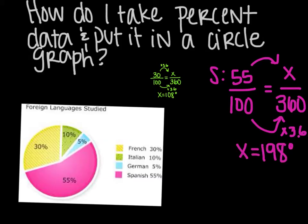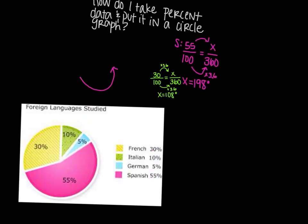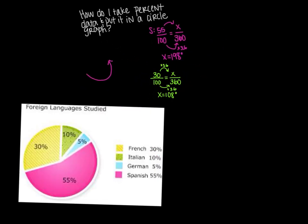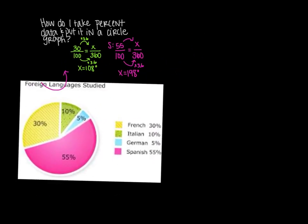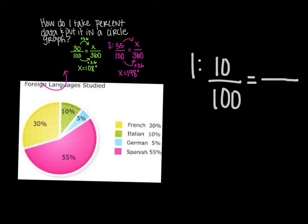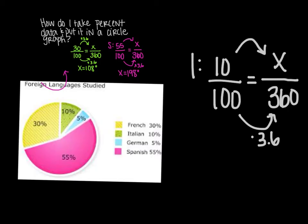55 times 3.6 is 198. So 198 degrees is from here to here. Two more we have left. Next one, we will do the Italian. And that's 10% out of 100% equals x over 360. Multiply by 3.6. Do the same thing. 10 times 3.6 is 36. So 36 degrees is the measure of that 10% space.